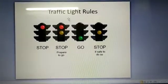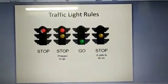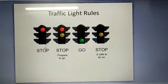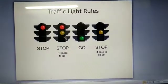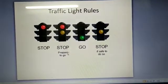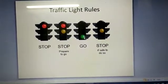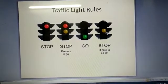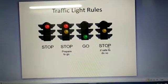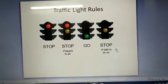Here are the traffic light rules: red light is on means stop, yellow light is on means prepare to go, green light is on means go, and yellow light on means stop if safe to do so.